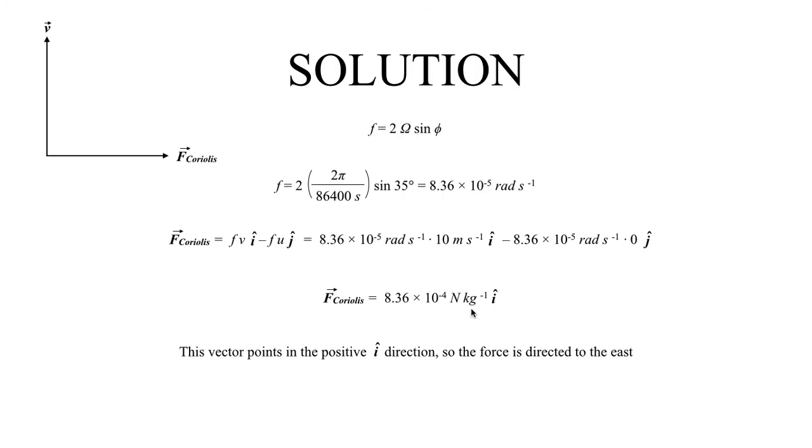The reason why it shows newtons per kilogram is because all the forces that we worked with are mass normalized. That means their units would be units of force divided by units of mass, which would be newtons divided by kilograms. So that's where this unit newtons per kilogram comes from—it comes from the fact that we're working with mass normalized forces, which means force over mass, which is newtons over kilograms.